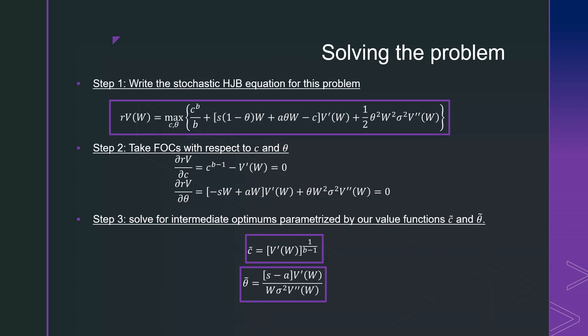Step number one is that we're going to write our stochastic Hamilton-Jacobi-Bellman equation for this problem, using the same cookbook formula from the previous video. Step number two is that we're going to take our first order conditions with respect to consumption and our parameter which determines the share of wealth allocated to our risky good. And we get the following result.